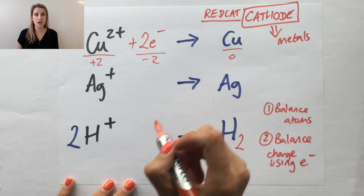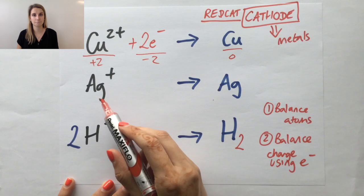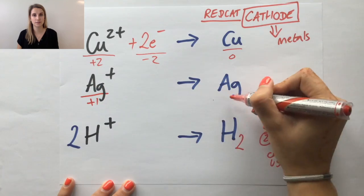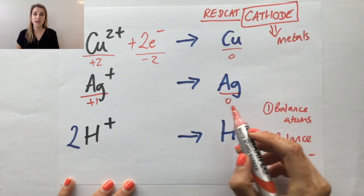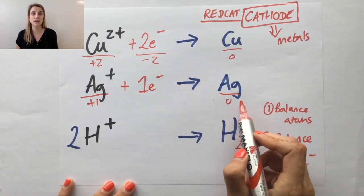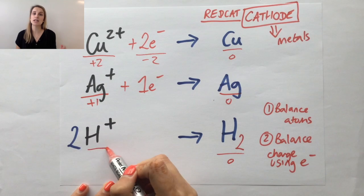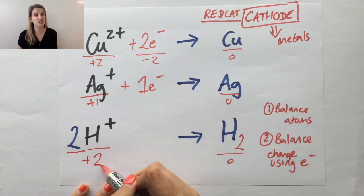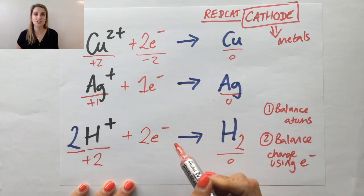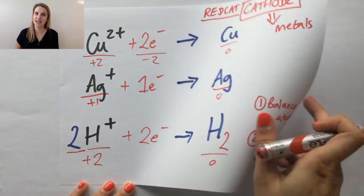I'd like you to pause the video here, and have a go at the other two. So nice and simply, the Ag has 1 plus on the left, zero on the right, so that means one electron is needed. For the bottom one, don't forget that because you've got two H pluses, that means the charge is plus 2. So I still need two electrons there to reduce those H pluses to make my hydrogen gas.